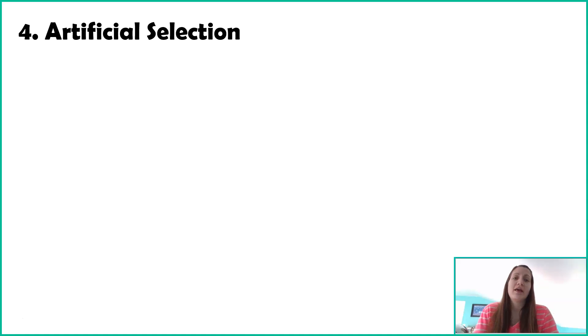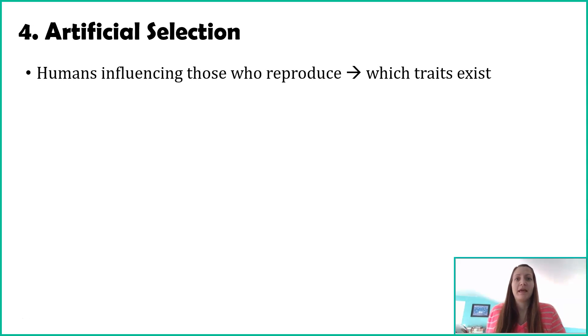Let's start with artificial selection. The other term, maybe more used in everyday language, is also called selective breeding. Humans, very specifically humans, not organisms, are going to influence the individuals who reproduce. This can be plants, animals, fungi, bacteria, etc. Because humans are choosing who's reproducing, in essence we're choosing which traits exist and which traits are passing on to the next generation.